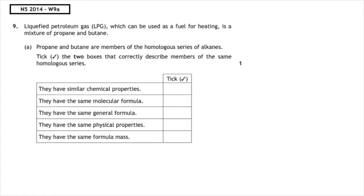This past paper question is from the National 5 2014 written 9a. Liquefied petroleum gas, which can be used as a fuel for heating, is a mixture of propane and butane — members of the homologous series the alkanes. Tick the two boxes that correctly describe members of the same homologous series. Remember: a homologous series is a family of compounds with the same general formula and similar chemical properties.